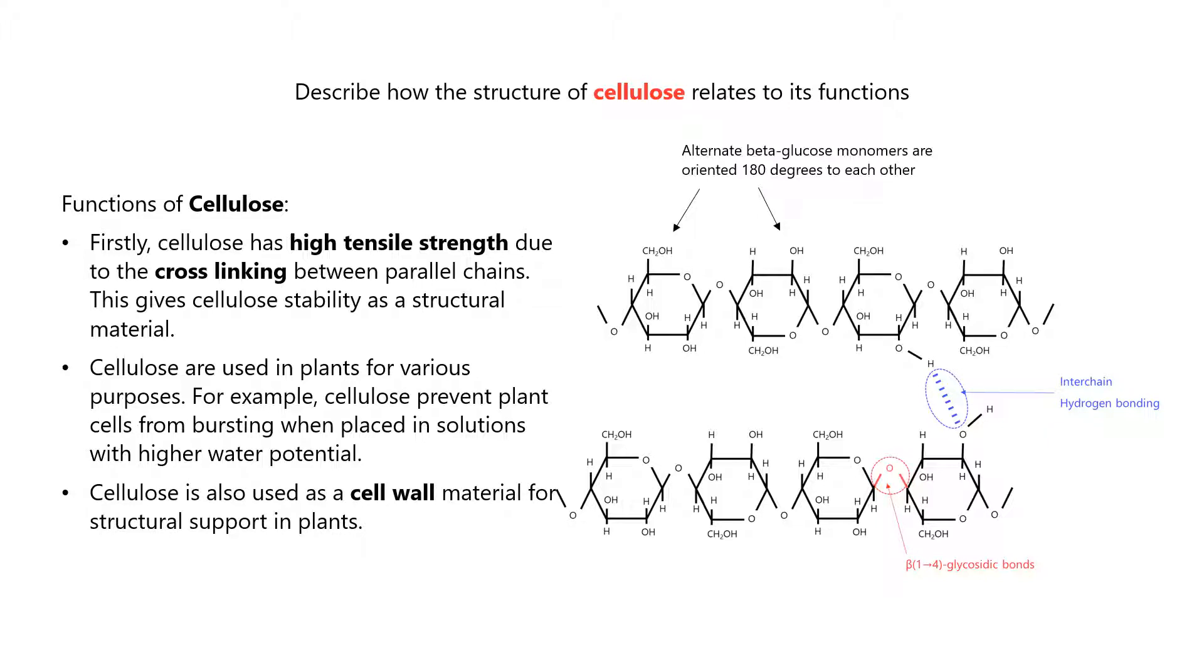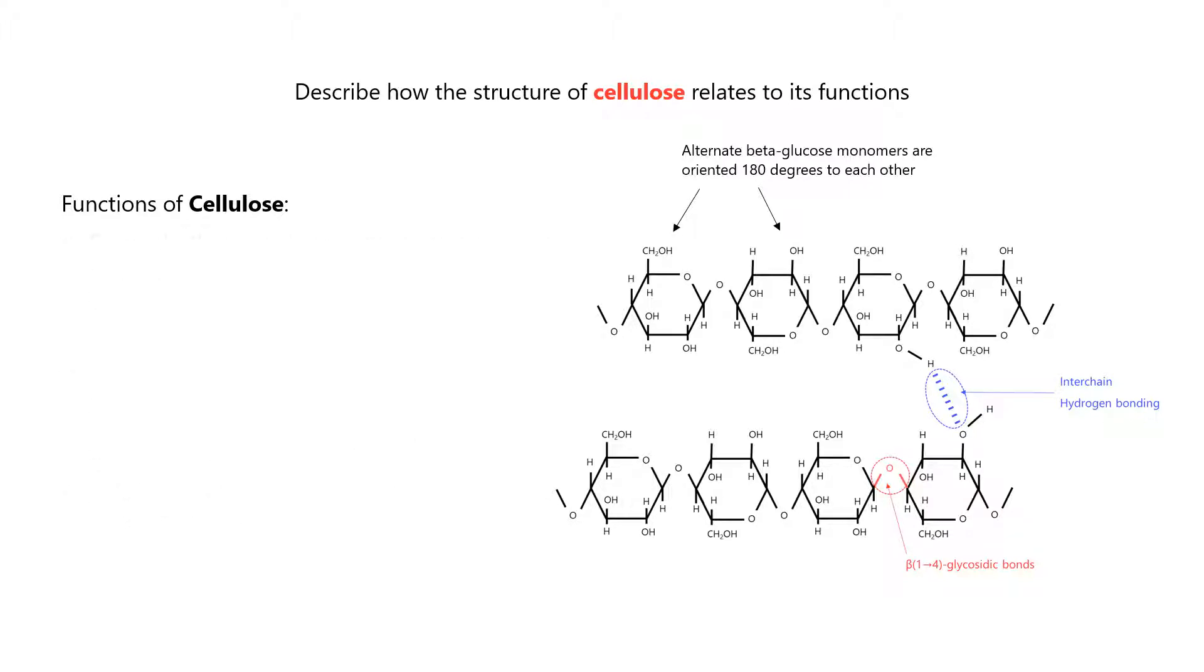Cellulose is also used as a cell wall material for structural support in plants. Secondly, there are large intermolecular spaces between macrofibrils. This allows passage of water and other solute materials in plants.